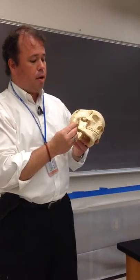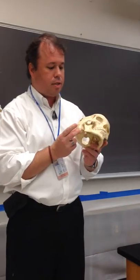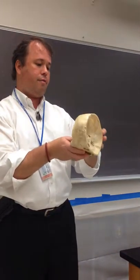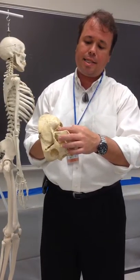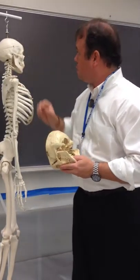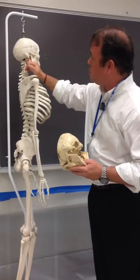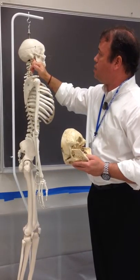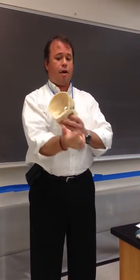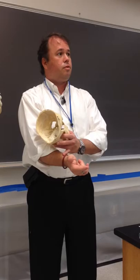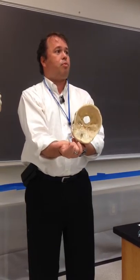The temporal bone also has a bump called the mastoid process — it looks like a little tiny breast. And there is a little tiny stylus or projection called the styloid process of temporal. We also have the styloid process of radius and the styloid process of ulna — we're going to see these words repeated.